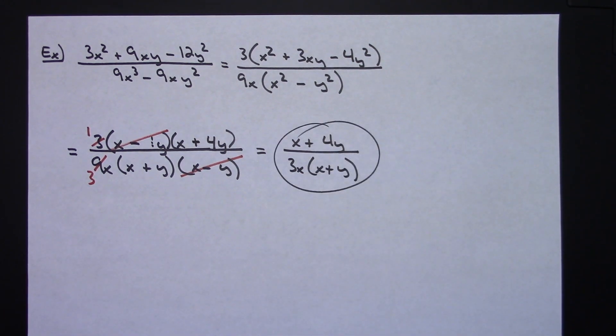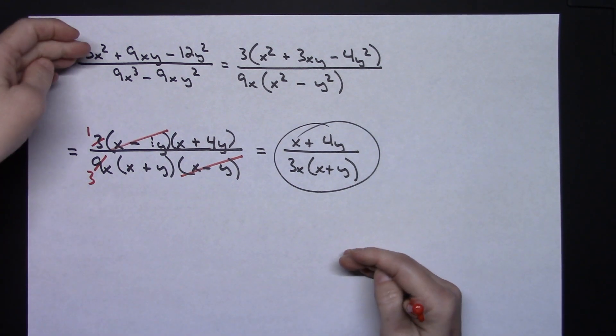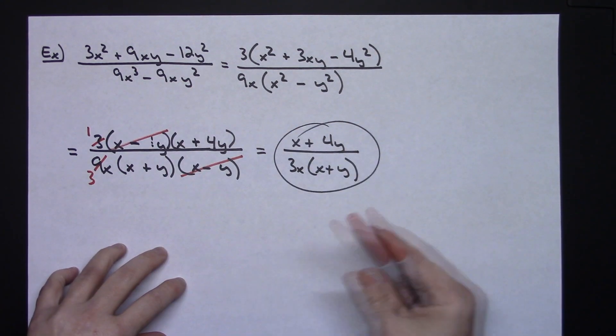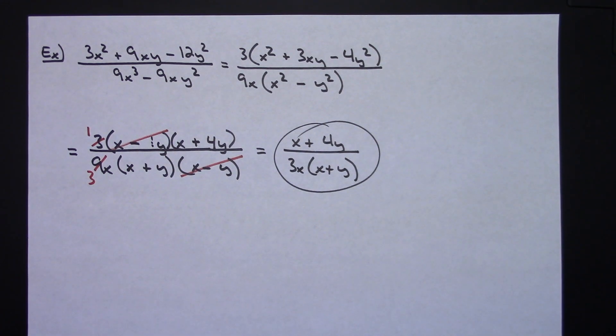All right so two quick examples there on how to go about simplifying a rational expression. All right the key to this is you have to know how to factor. Everything in that numerator and denominator is going to be something that is probably going to factor which then will allow you to cross things out when you get to that factored form.